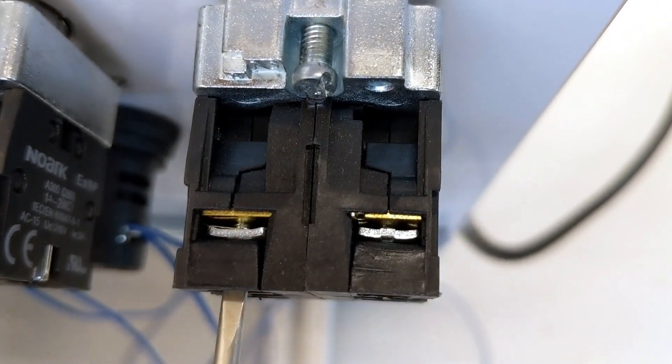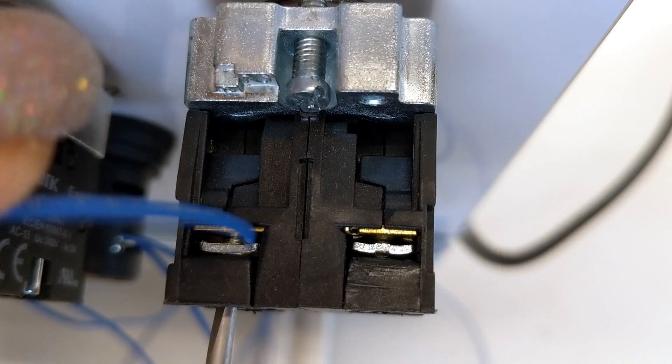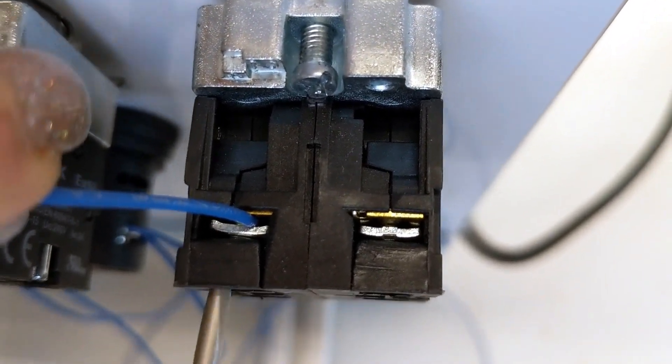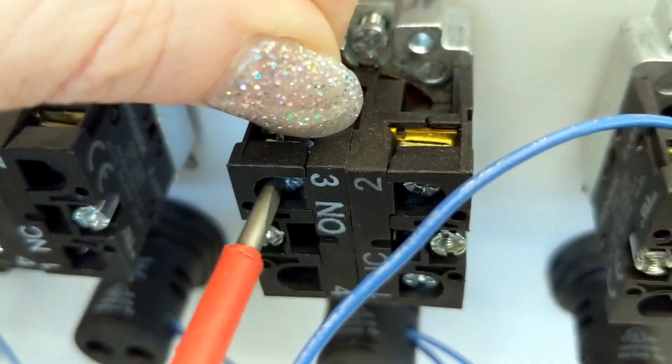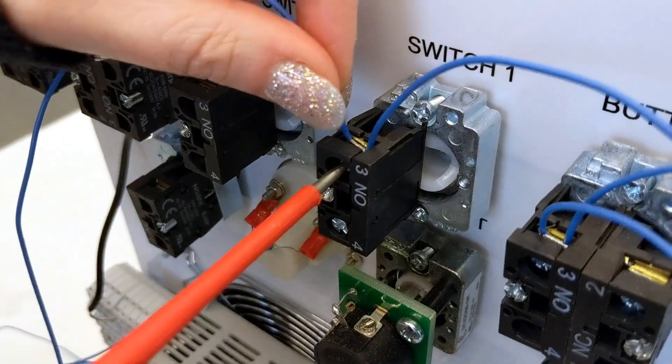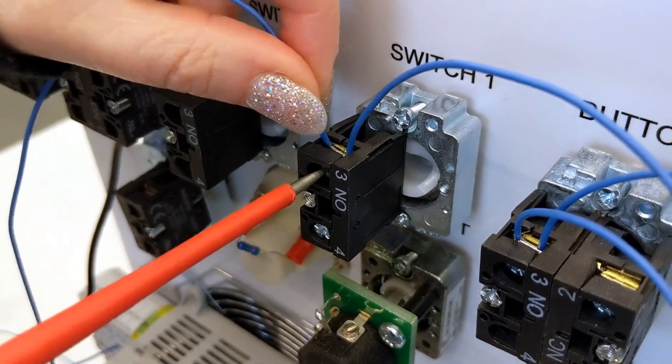Now I'm going to do the same thing with the normally open contacts on buttons 1, 2, 3, and 4 plus switch 1, looping them all to the first set of gray terminal blocks to the left of the PLC, which is the plus 24 volt.